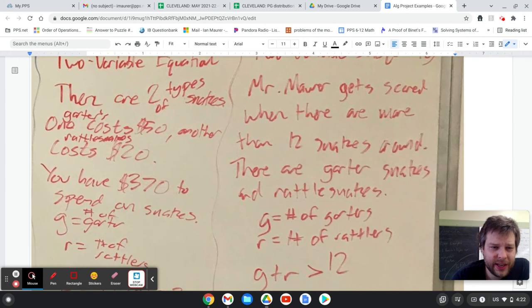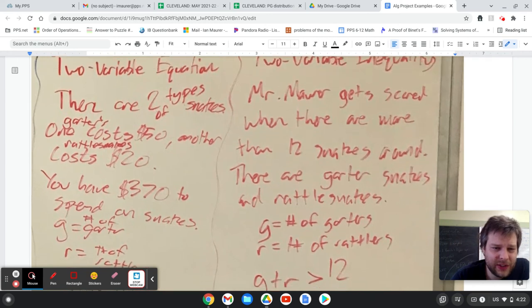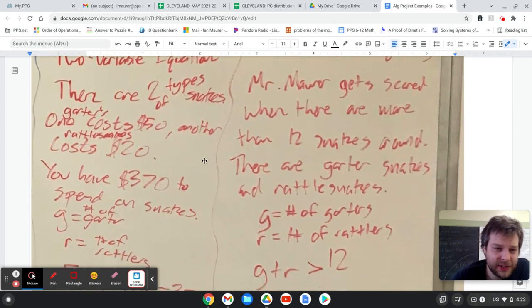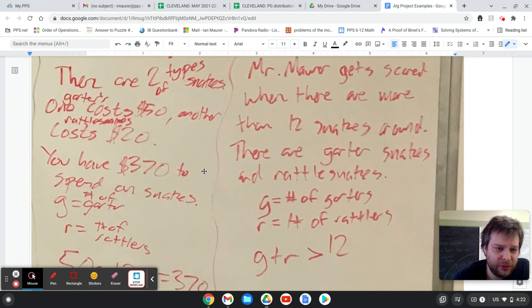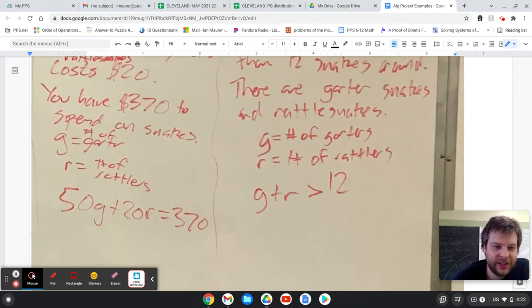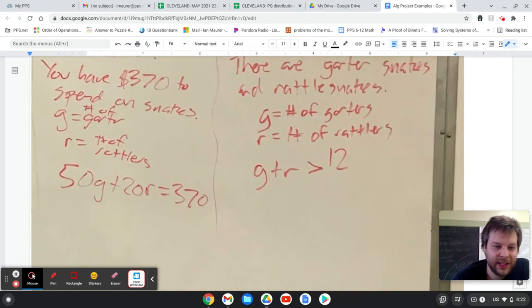Then we got even weirder with the two variable equations. So you're purchasing snakes - garter snakes for 50 bucks a pop and rattlesnakes for $20 a pop, and you have $370 to spend on snakes. And so we could come up with a standard form equation, 50G plus 20R equals 370.